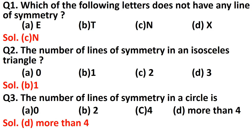Question number two: the number of lines of symmetry in an isosceles triangle. In an isosceles triangle we have two sides equal, so it has one line of symmetry. This line of symmetry lies between the two equal sides — from the common vertex of the two equal sides to the midpoint of the opposite side. So an isosceles triangle has one line of symmetry.